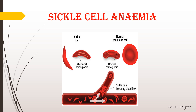Sickle cell anemia is a genetic blood disorder. It affects the shape of red blood cells, which carry oxygen to all parts of the body. Normally, red blood cells are rounded and flexible so they can travel easily through narrow blood vessels. But in a sickle cell anemic person, the shape of the RBC becomes sickle-shaped, and due to their shape they get stuck in narrow blood vessels and are unable to transport oxygen effectively, causing pain and damage to organs.